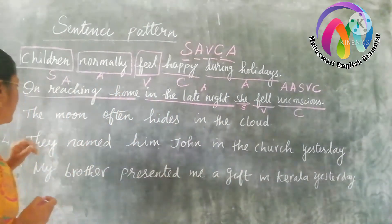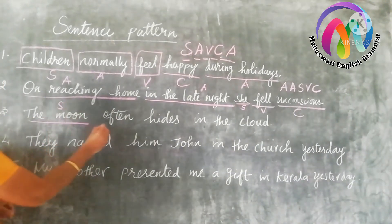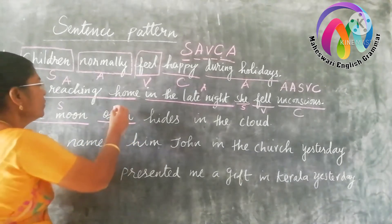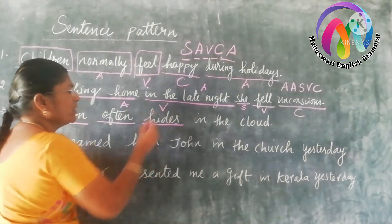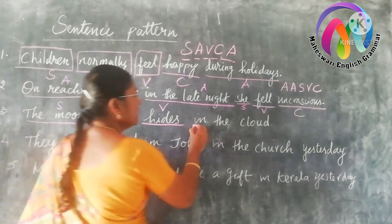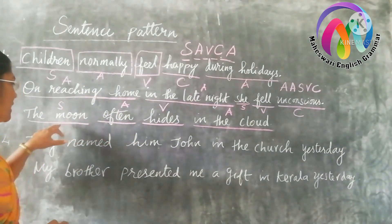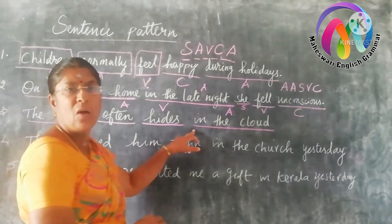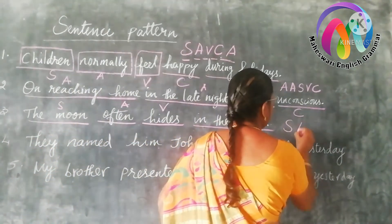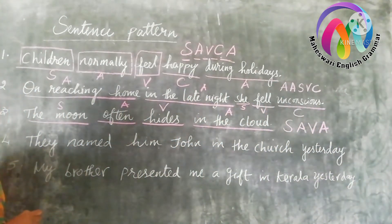That is the A A S V C pattern. Let us see the next one: 'The moon often hides in the cloud.' 'The moon' is the subject. 'Often' denotes time, asking the question 'when,' so it is an adverbial. 'Hides' is the verb. 'In the cloud' is an adverbial. So the sentence is in the pattern of S A V A.